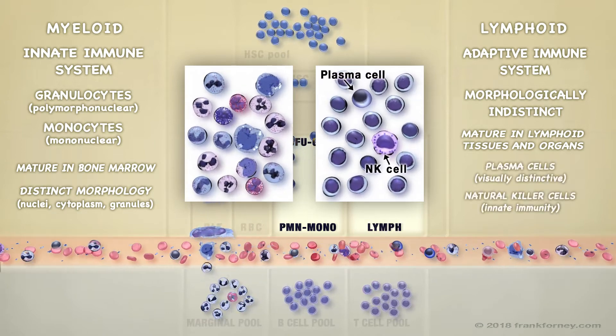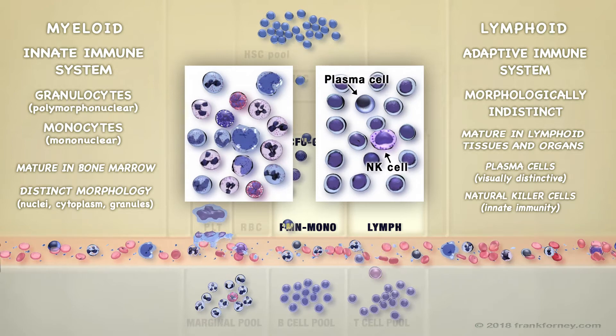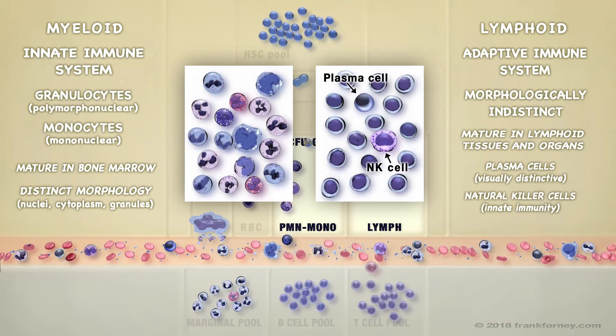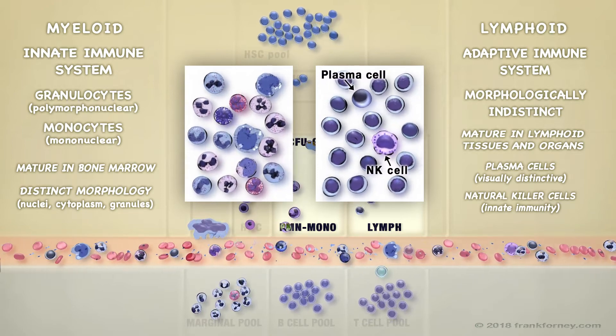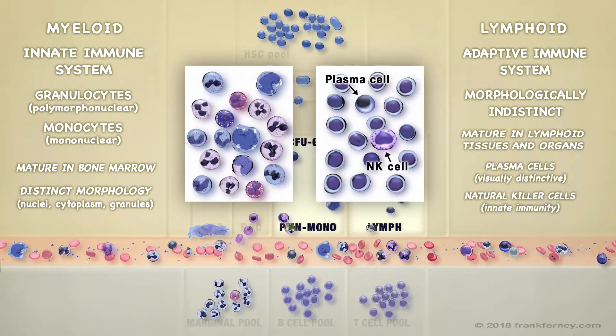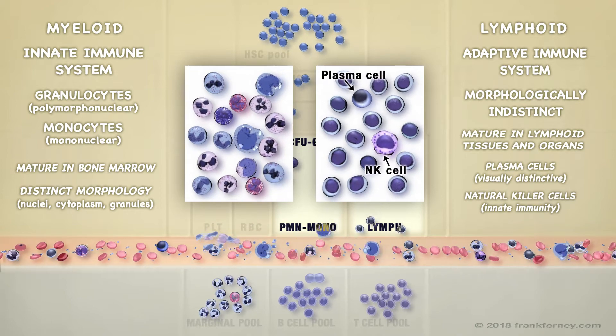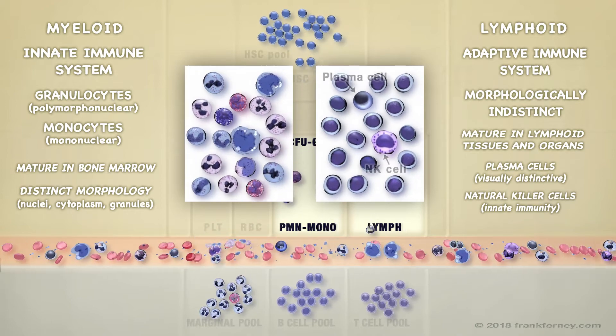Exceptions include the plasma cell, a powerful humoral immune cell, and large granular lymphocytes, also known as natural killer cells.